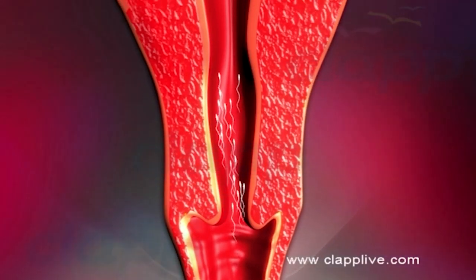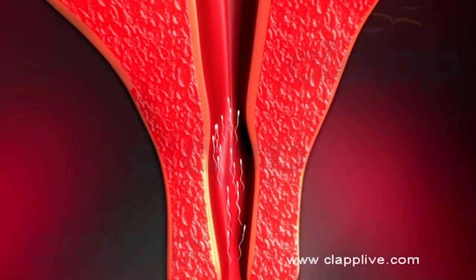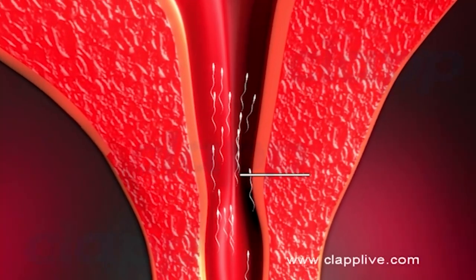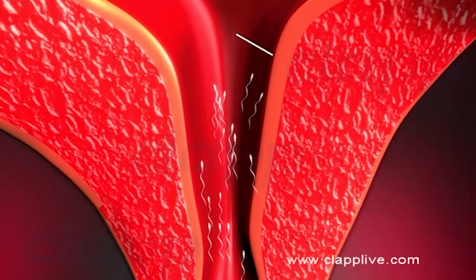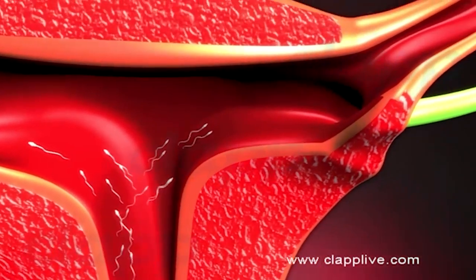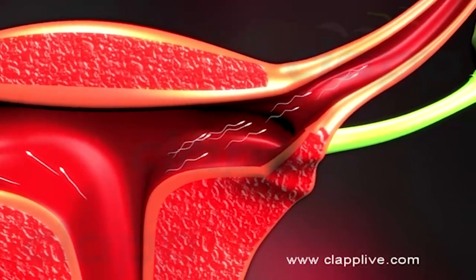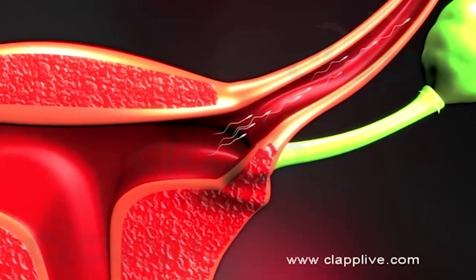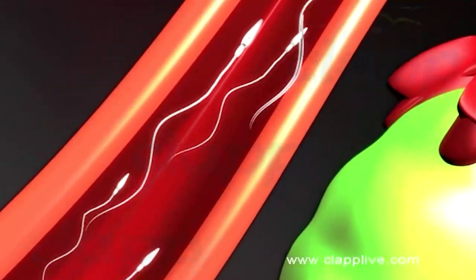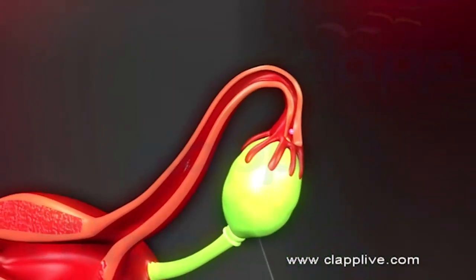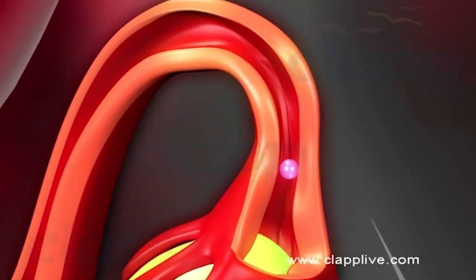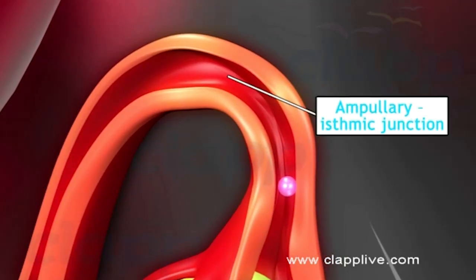Human sperms are motile and rapidly swim towards the ovum lying in the fallopian tube. Sperms travel through the cervix into the uterus and reach the ampullary isthmic junction of the fallopian tube. Within five minutes, about 100 sperms reach the fallopian tube. The ovum released from the ovary is also transported to the ampullary isthmic junction, where fertilization occurs.